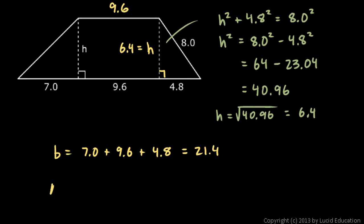And then the area will be the average of the bases. That's going to be (9.6 + 21.4) ÷ 2 × 6.4, because that's the height, 6.4. And from there, it's just a matter of computation. You add those numbers up, divide by 2, multiply by the height, and it comes out to 99.2.